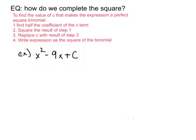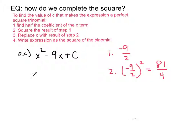Now let's look at x squared minus 9x plus C. The first step is to take half of negative 9. I'll leave it in fraction form: negative 9 over 2. The second step is to square that number. Any negative number squared comes out positive, so negative 9 squared is positive 81, and 2 squared is 4 — because to square a fraction we square the numerator and denominator. So 81 over 4 is the value of C that makes this a perfect square trinomial. We rewrite this as x squared minus 9x plus 81 over 4, and as the square of the binomial: x minus 9 over 2, squared.